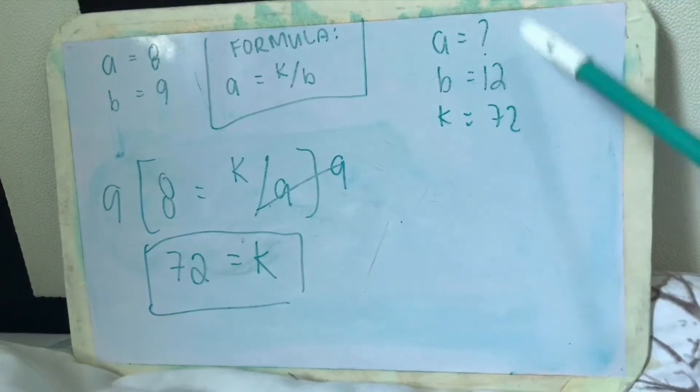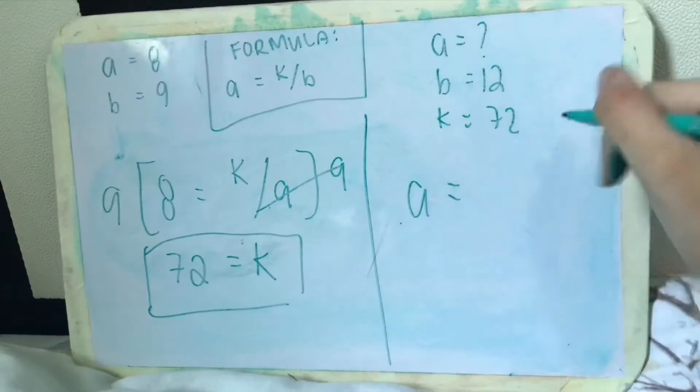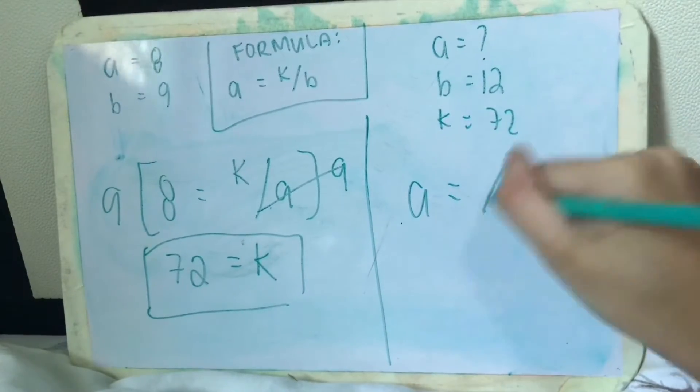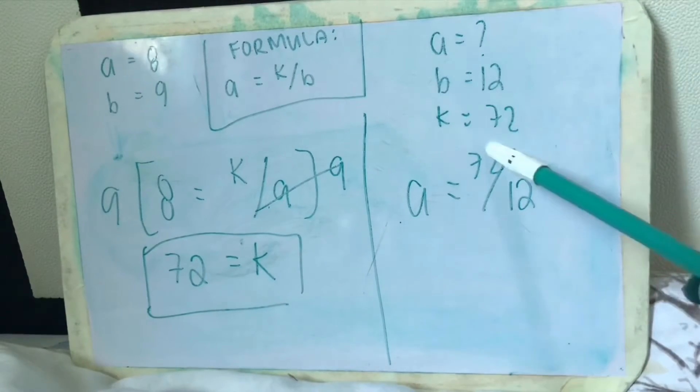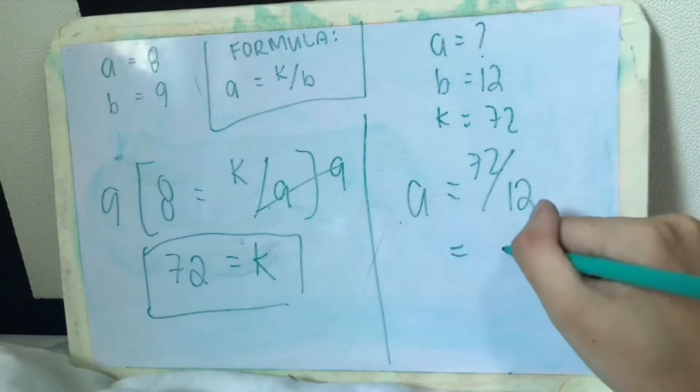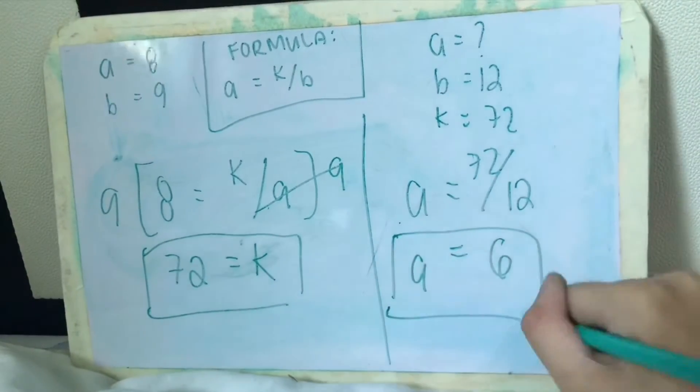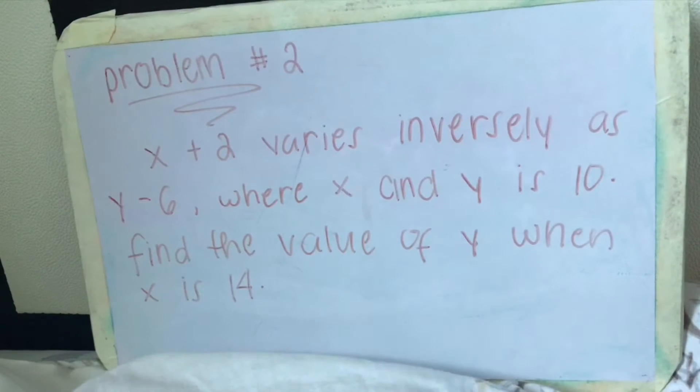So let's solve for the question. What is the value of a when b is 12? So what is the value of a when b is 12 and our constant is 72? So divide 72 by 12. When you divide 72 by 12 the result will be 6, so this is our answer. Let's solve a harder example, problem number two.